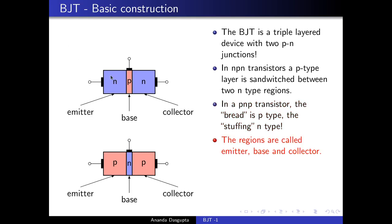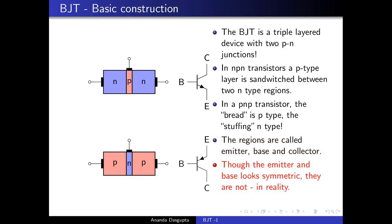These three regions are called the emitter, base, and collector. The two outer regions are emitter and collector respectively, and the middle region is the base. In a circuit diagram, the BJT symbol has a base line and two legs sticking out, and the arrow is placed on the emitter lead. The direction of the arrow helps you to distinguish which one is the emitter and which one is the collector.